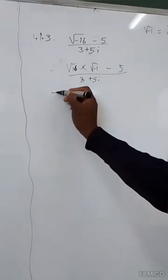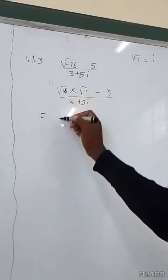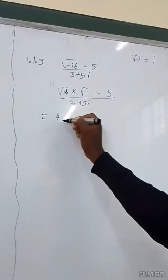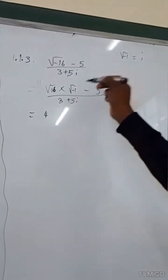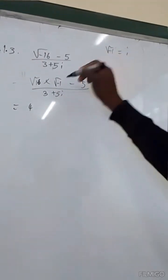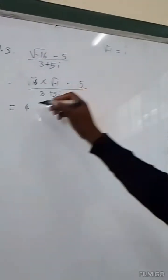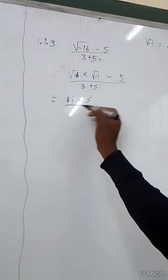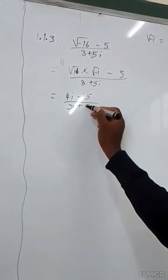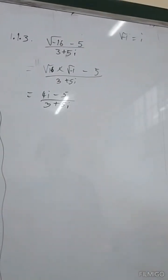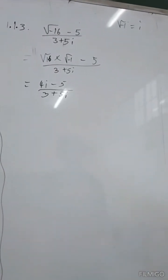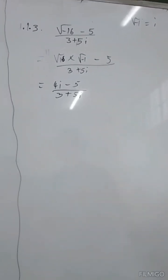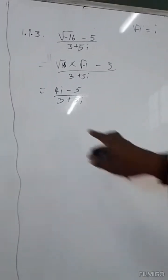So it will be equals to 4 times i, where we replace square root of negative 1 by i — giving us 4i minus 5, over 3 plus 5i. Therefore, the following step is to rationalize by the conjugate of the denominator.